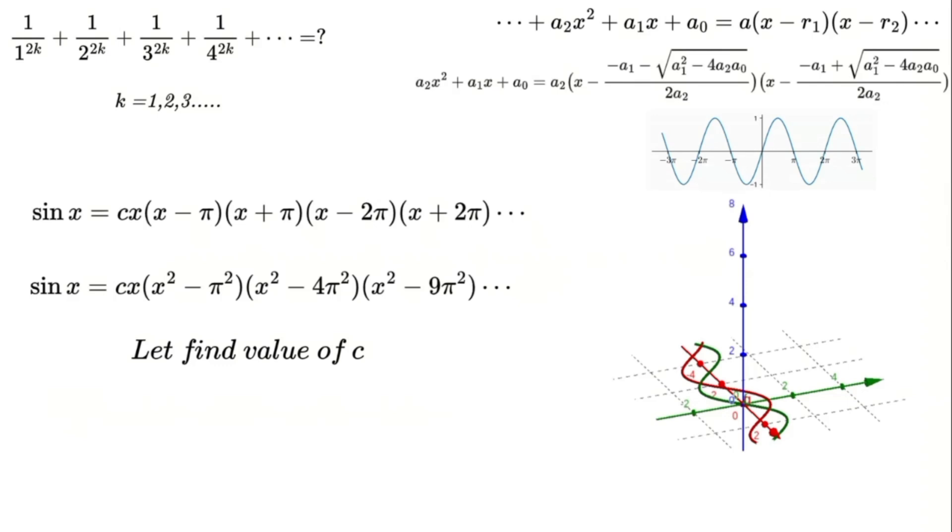Here's something fascinating. c isn't just a random constant. It's the coefficient of the last term of a polynomial. But wait, you might ask, how can an infinite series like sine have a last term? The answer lies in convergence. Although the sine series is infinite, it converges, allowing us to determine this coefficient.